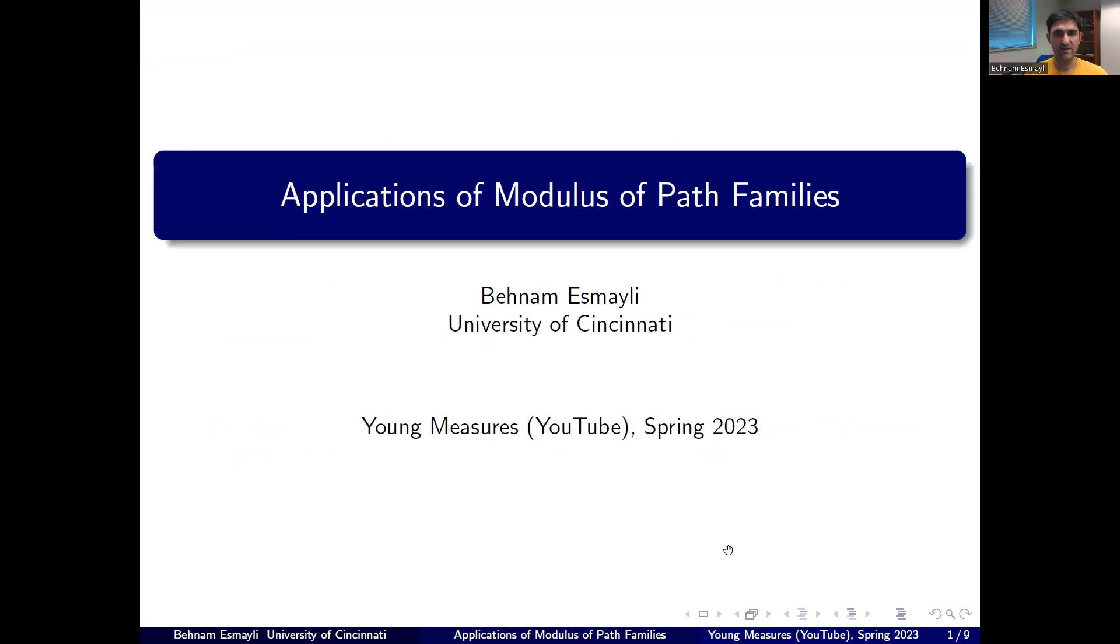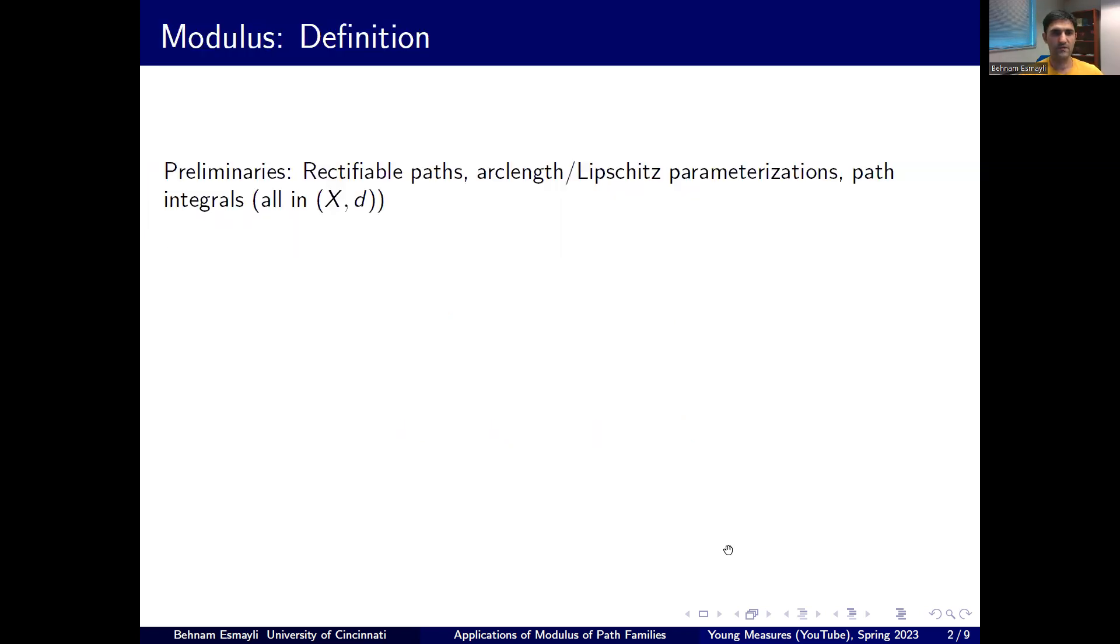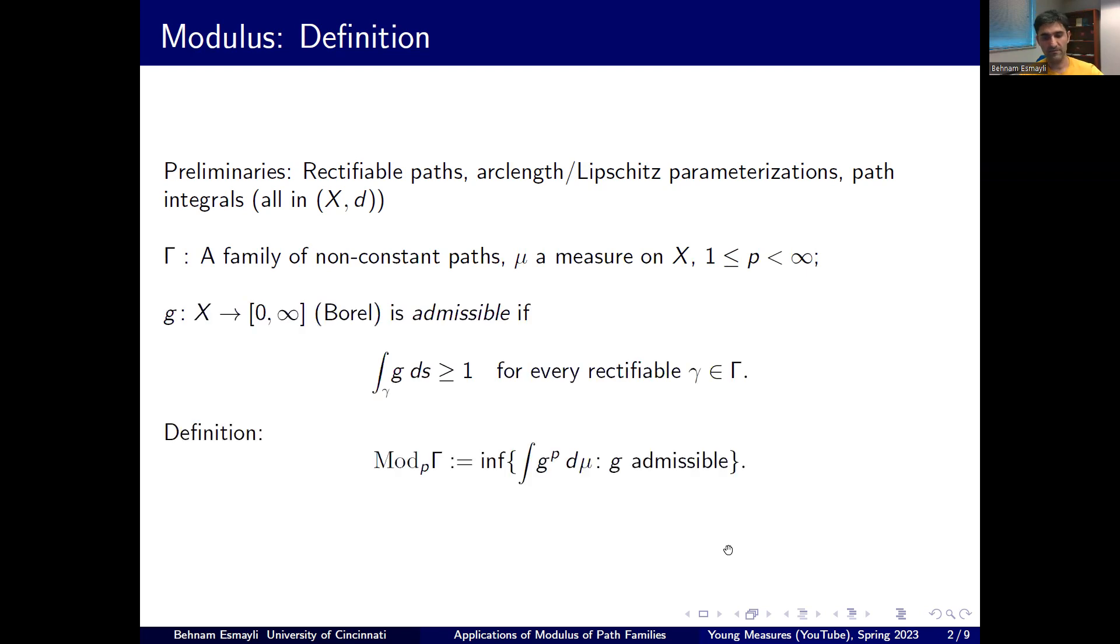So that's why I believe that modulus of path families is a notion that deserves to be better known. And maybe some courses have to devote some time to that. The only difficulty I see why it's almost never covered in undergraduate courses is there's some background needed. First of all, you need this theory of path metric spaces or even like in Euclidean setting. Then you need some knowledge of Lp theory, right? Because the definition takes into account that. But it's still one for advanced undergraduate courses. This could be integrated into one of the courses. And I think it deserves that attention. Thank you so much for watching this far.